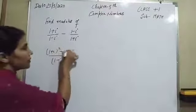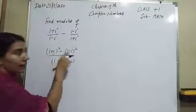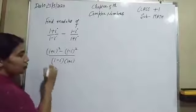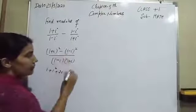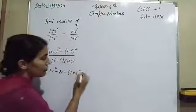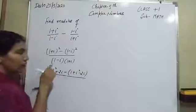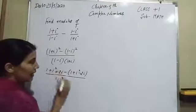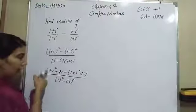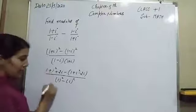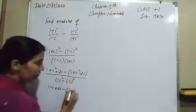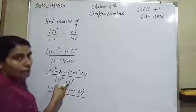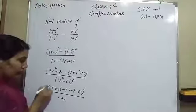Use the identity A plus B whole squared: 1 squared plus eta squared plus 2 eta; and A minus B whole squared: 1 squared plus eta squared minus 2 eta. In the denominator, A minus B into A plus B gives A squared minus B squared: 1 squared minus eta squared. Now put the value of eta squared as minus 1. In the numerator: (1 minus 1 plus 2 eta) minus (1 minus 1 minus 2 eta). In the denominator: 1 minus (minus 1), which gives 1 plus 1 equals 2.